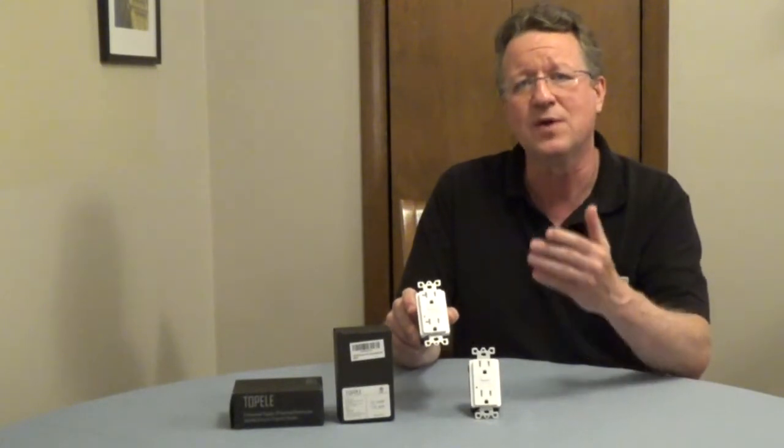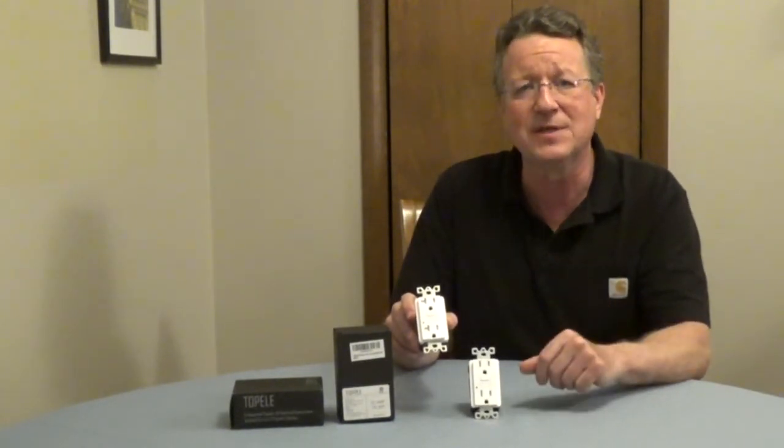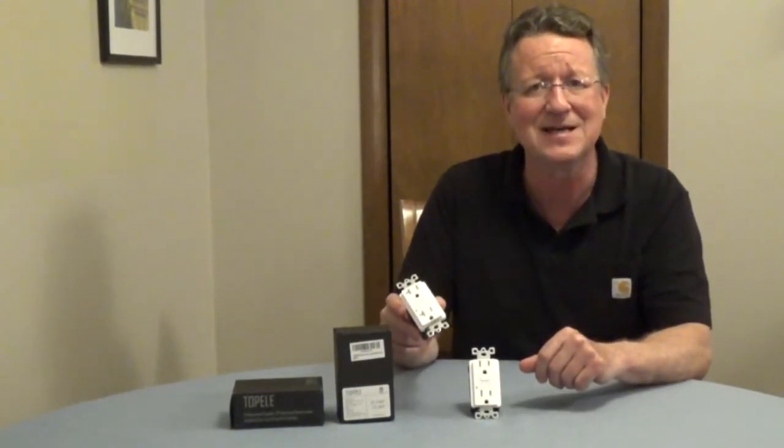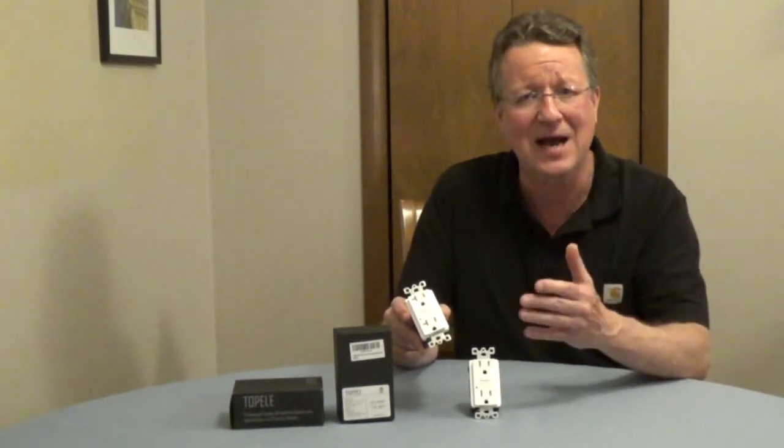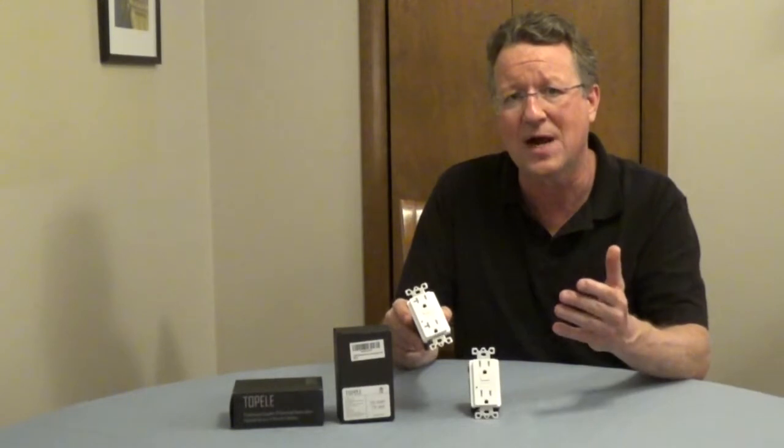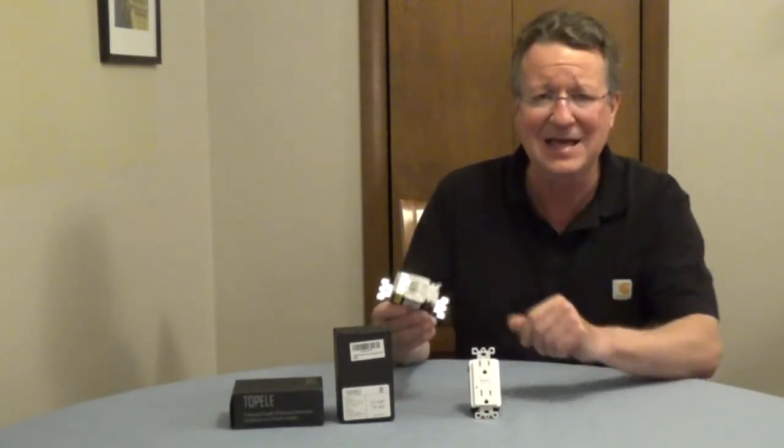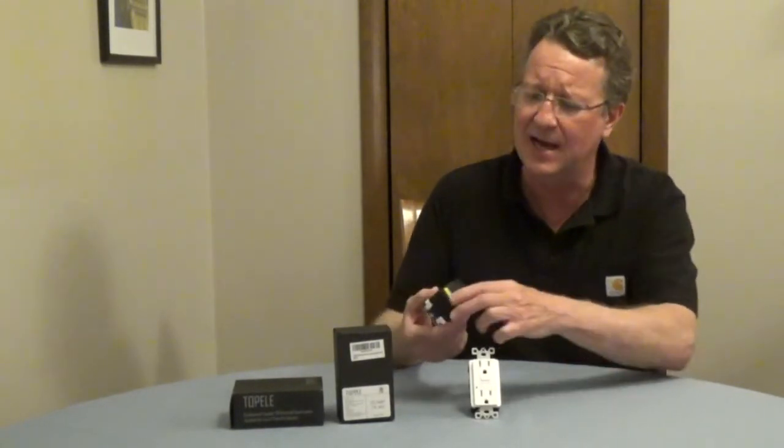The next thing you need to know is whether you have one or two cables coming into the electrical box where you're going to be connecting this. If there's one cable coming into the box, you have a hot wire, a neutral wire, and a ground, you're going to be using the line side on the back of the GFCI.